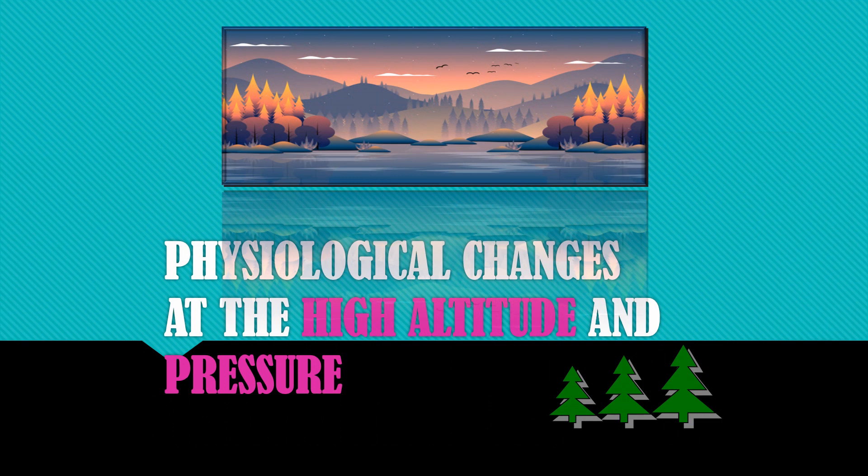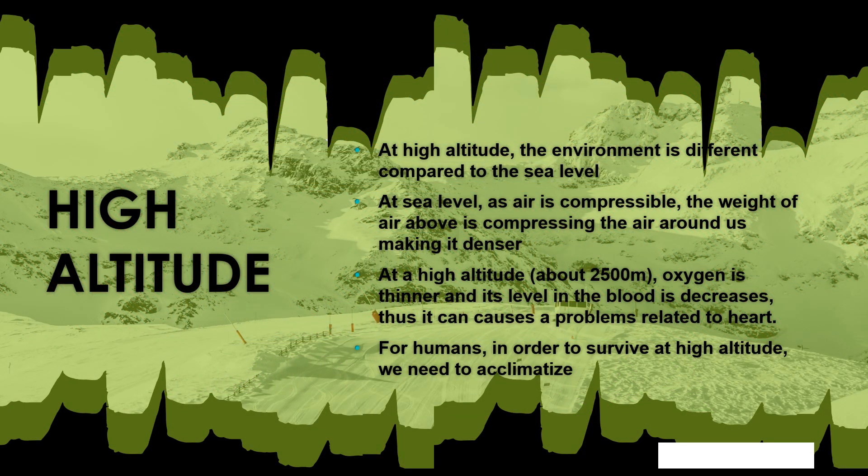Next, we will discuss the physiological changes in breathing at high altitude. At high altitude, the environment is different compared to sea level. At sea level, air is compressible and the weight of air above compresses the air around us, making it denser. At high altitude, oxygen is thinner and its level in the blood decreases, causing problems for our heart. For humans to survive at high altitude, we need to acclimatize — a condition where we become accustomed to a new climate or condition, meaning changes occur in the body so it can cope with the shortage of oxygen.